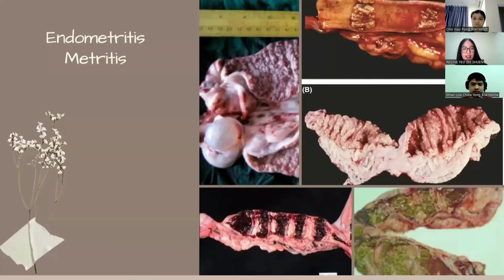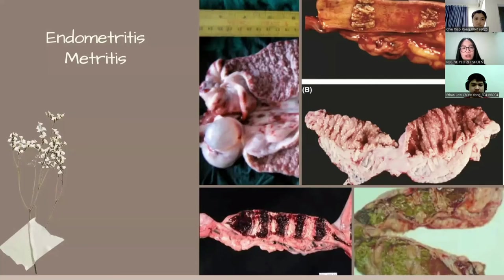Endometritis is inflammation of the uterine lining called the endometrium, but it can affect all layers of the uterus. The uterus is typically aseptic. However, the travel of microbes from the cervix and vagina can lead to inflammation and infection. This condition usually occurs as a result of the rupture of the membrane during childbirth.